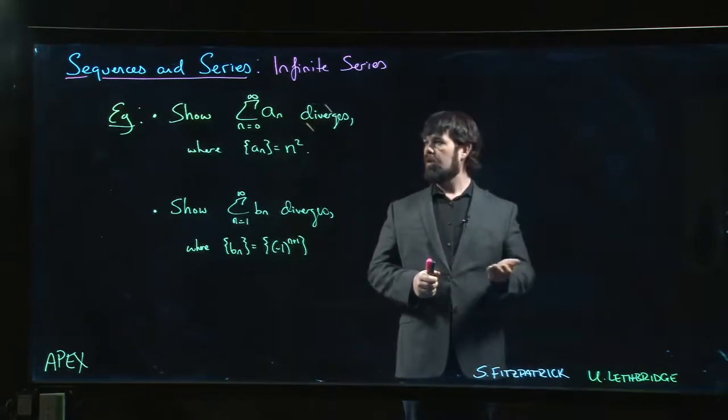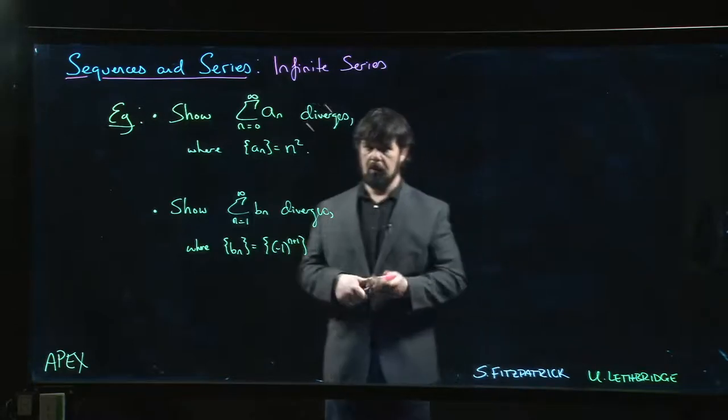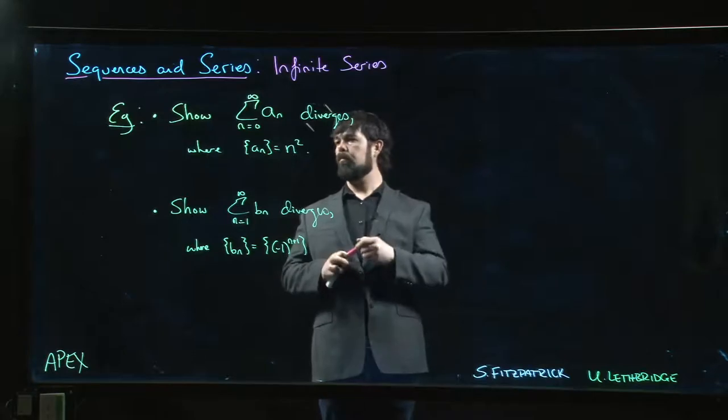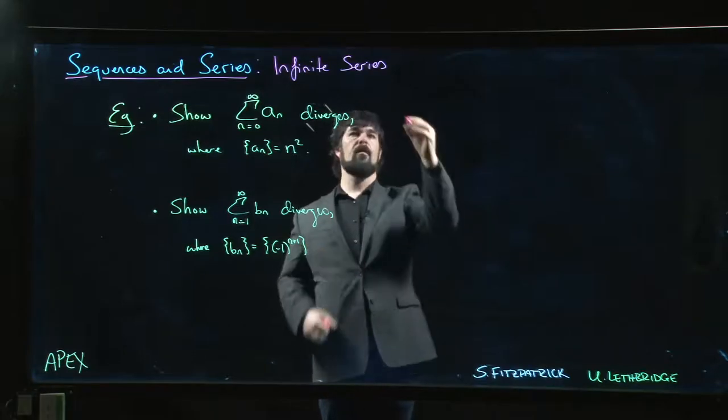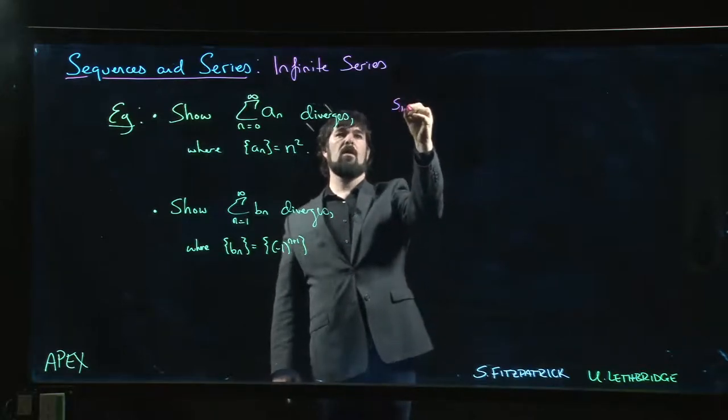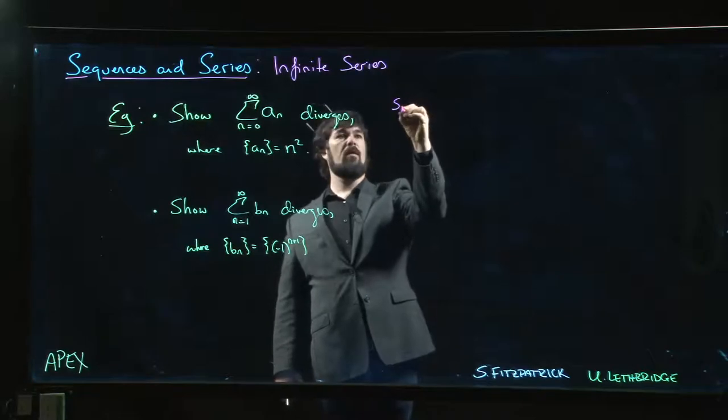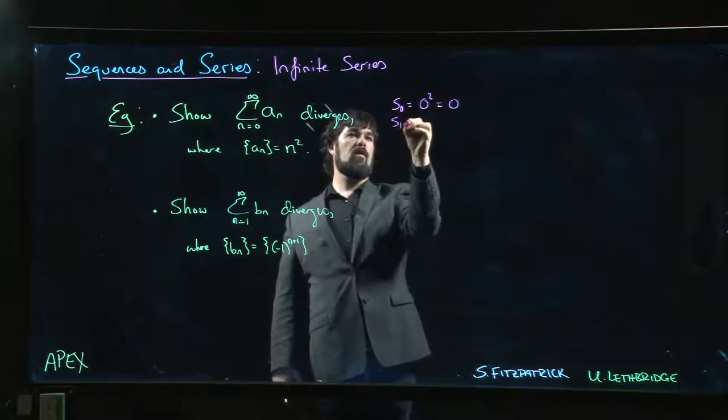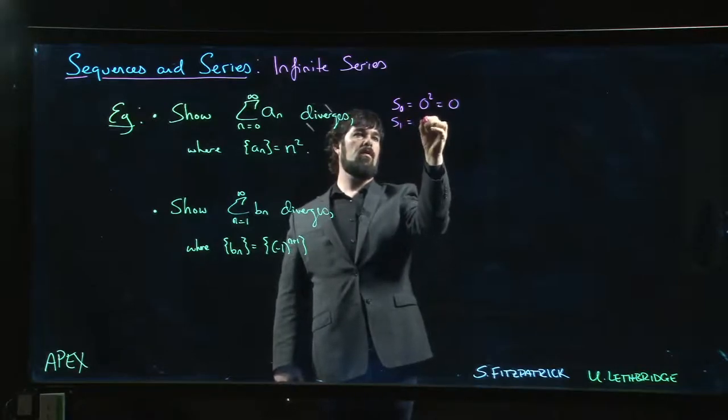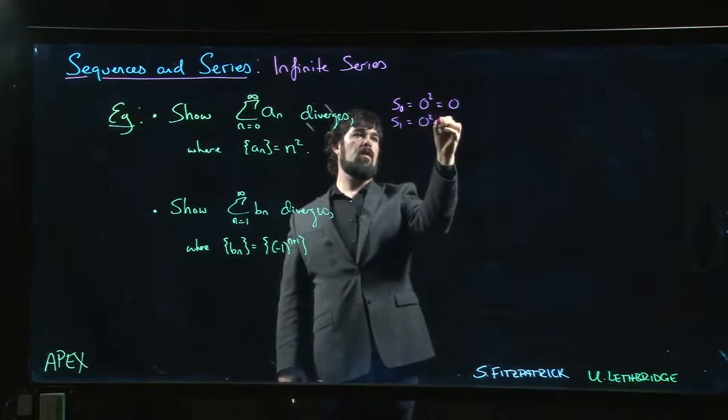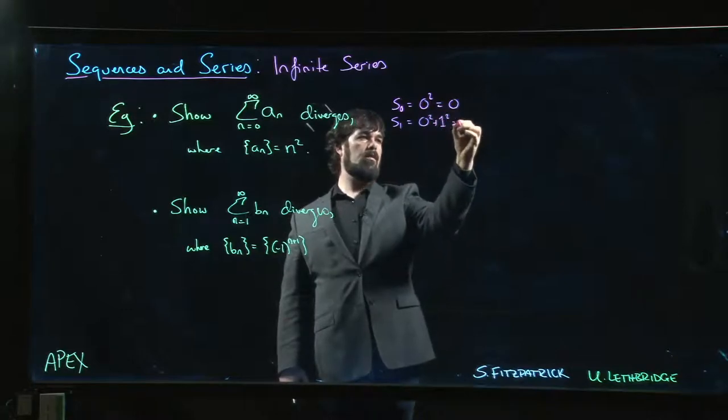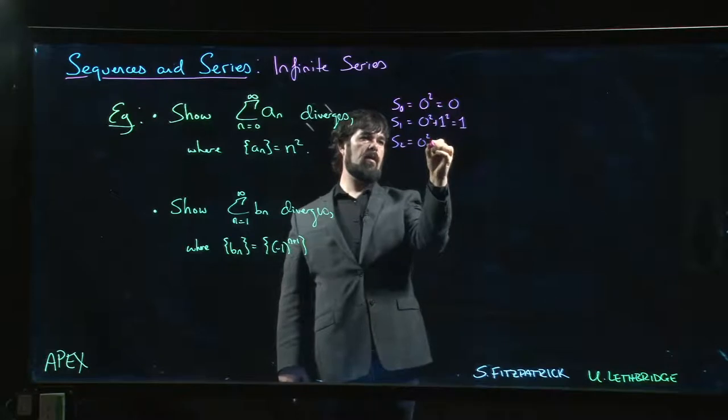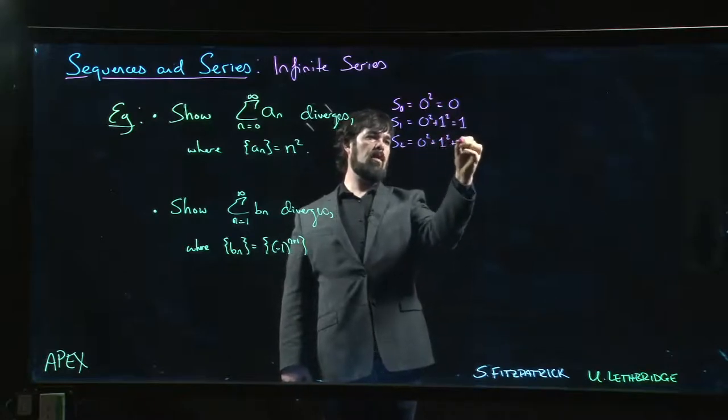Here are two series that we want to show diverge. We can start by thinking about what the partial sums look like. We have s0 is zero squared, which is zero. s1 is zero squared plus one squared, which is one. s2 is zero squared plus one squared plus two squared, which is five.